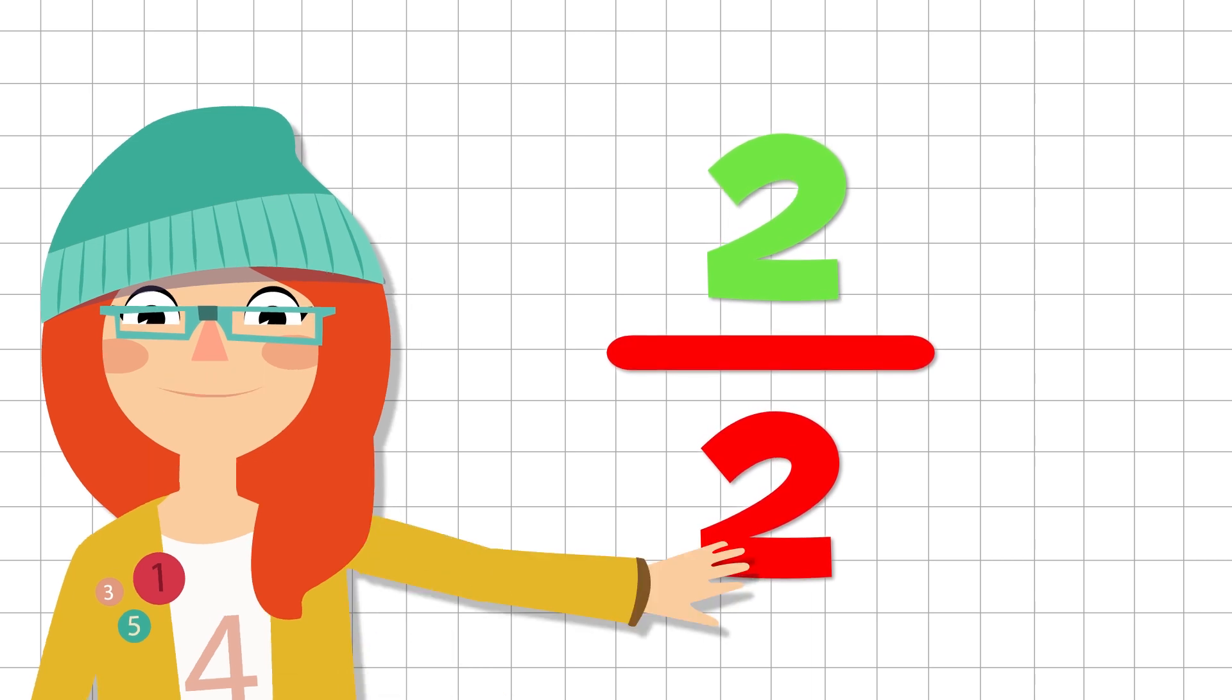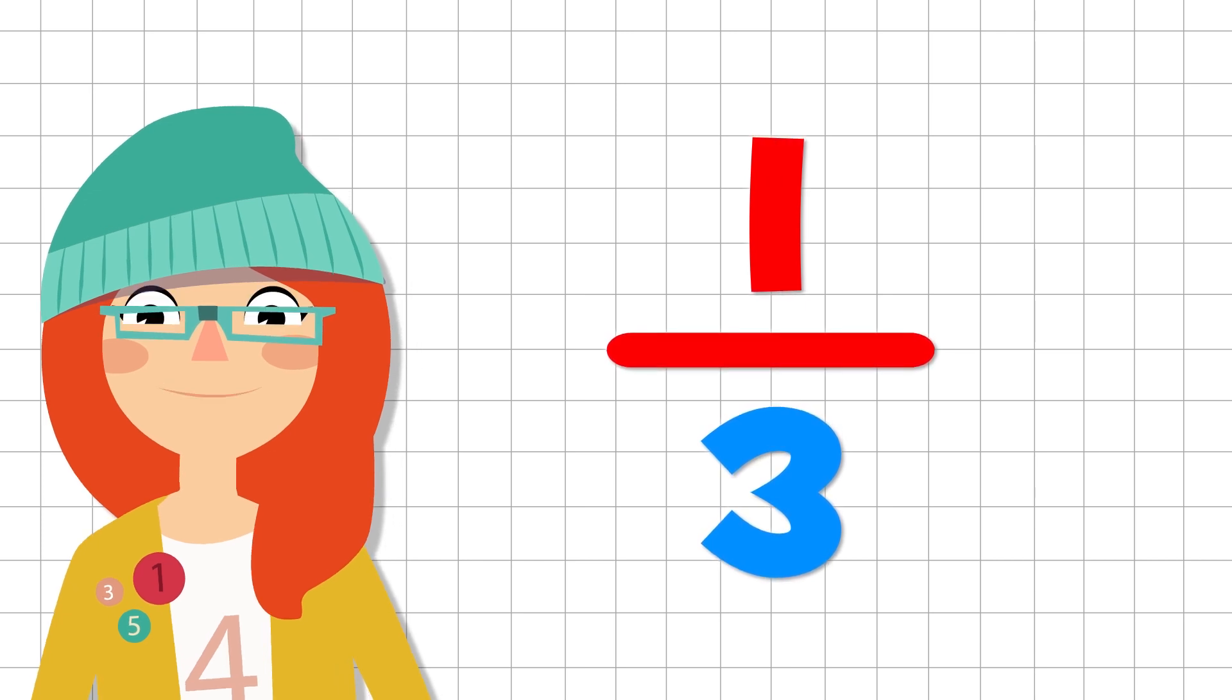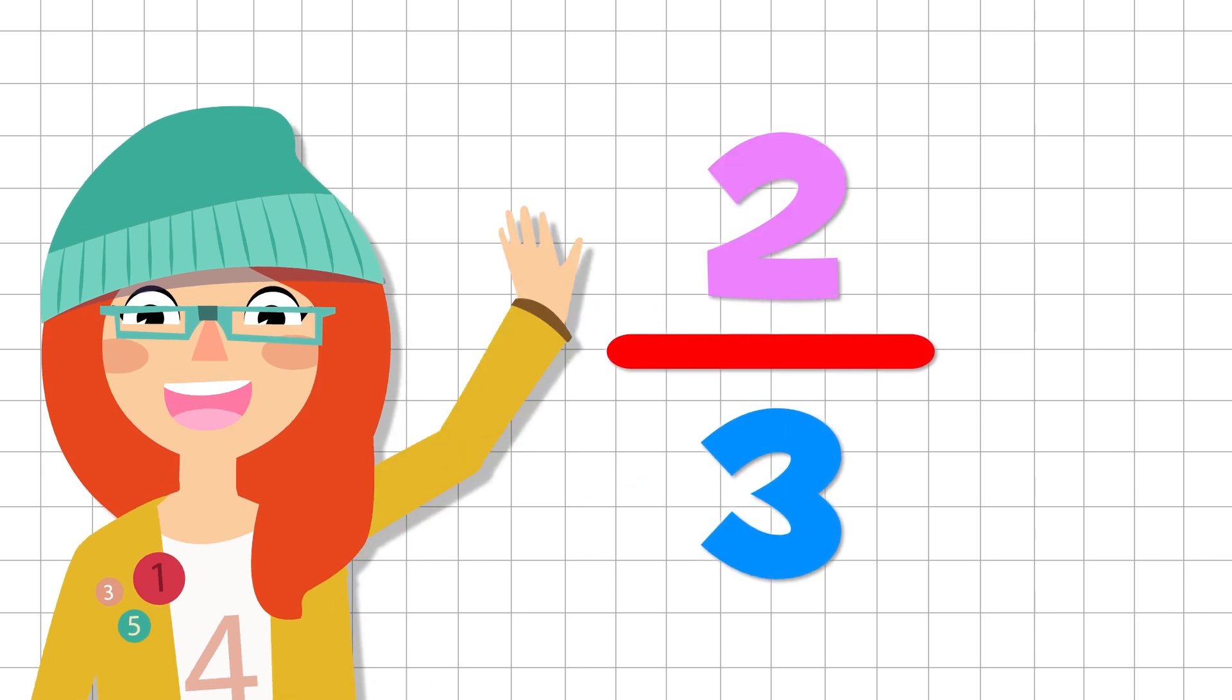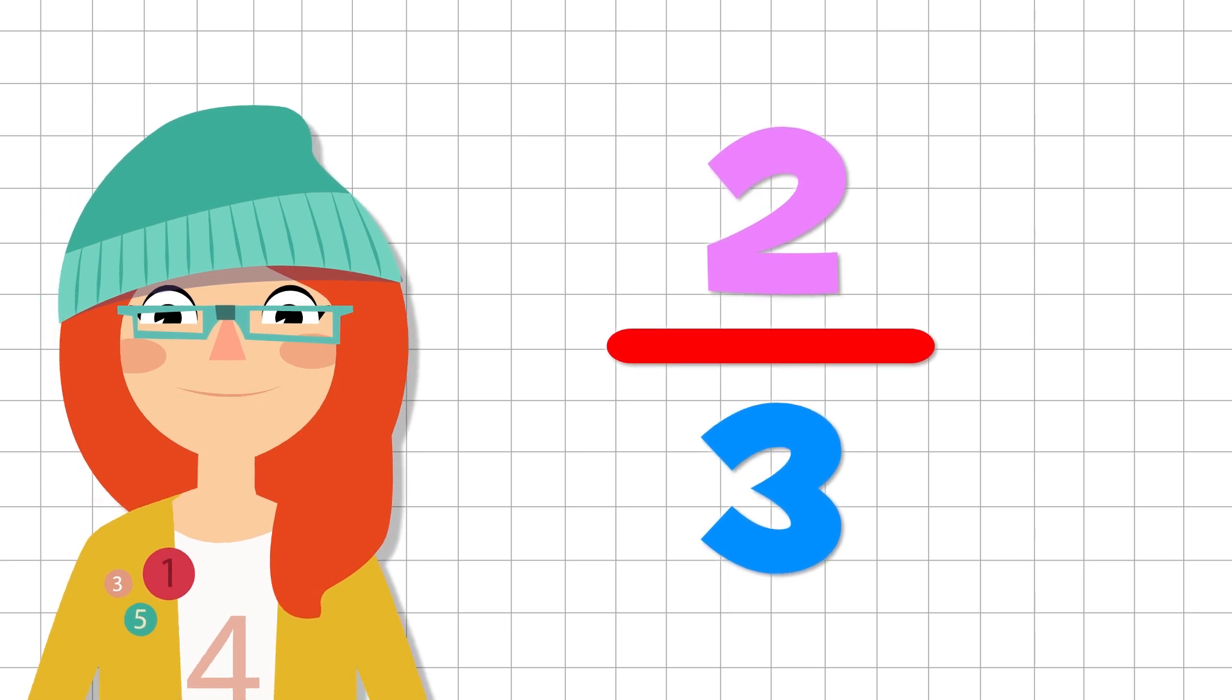When the denominator is a three, we say third. This means that this fraction would be... Come on, you say it. That's it. One third. And if I use a two for the numerator, how would we read the fraction? Two thirds. Great!